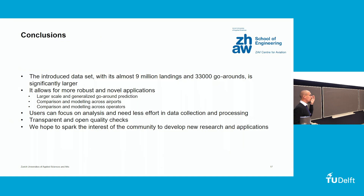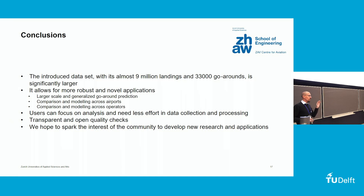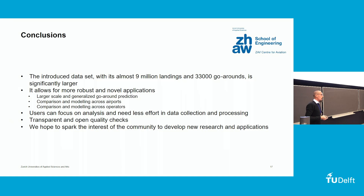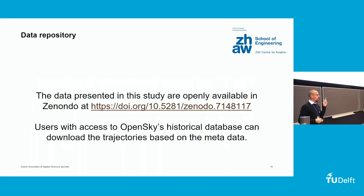To conclude: compared to what was available before, this is a much, much bigger dataset. Studies we've seen usually deal with go-around datasets of up to 1,000 go-arounds; we have 33,000. The dataset is mainly metadata, not actual trajectories, but a Python script in the repository allows you to download the actual trajectories from the historical database if you're interested. We hope it allows for more novel and robust research into go-arounds. The data is available on Zenodo — check it out.